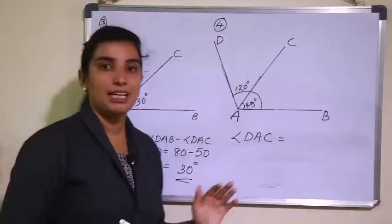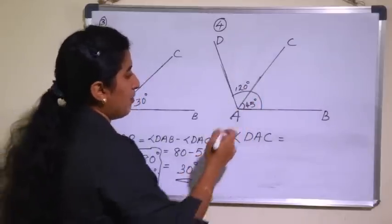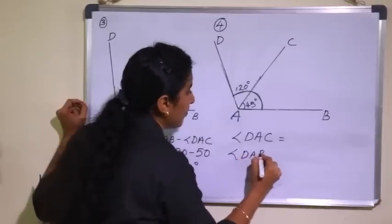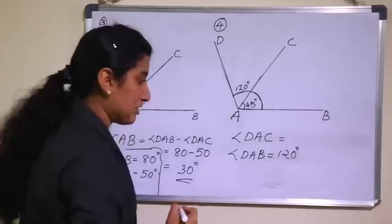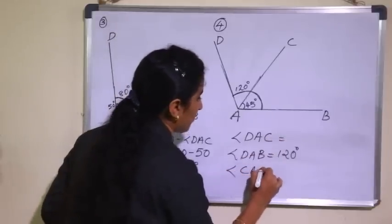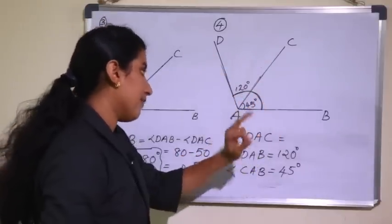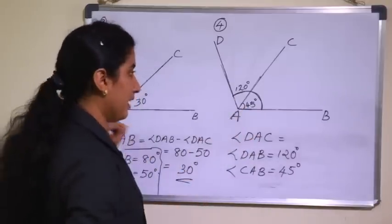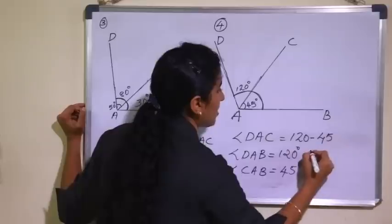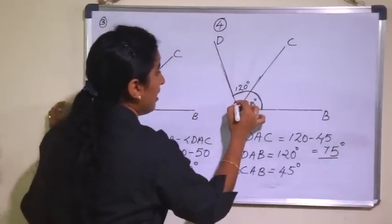Now the fourth and last question. Angle DAB is equal to 120 degrees, and angle CAB is equal to 45 degrees. We need to subtract: 120 minus 45 is equal to 75 degrees. So this angle DAC is 75 degrees. Check: 45 plus 75 equals 120 degrees.